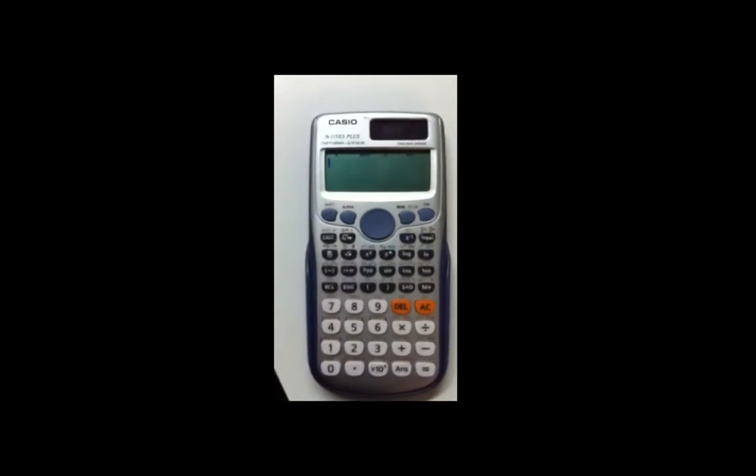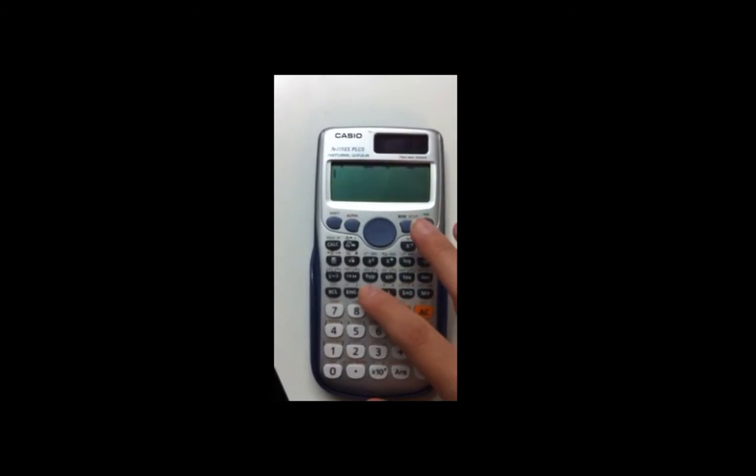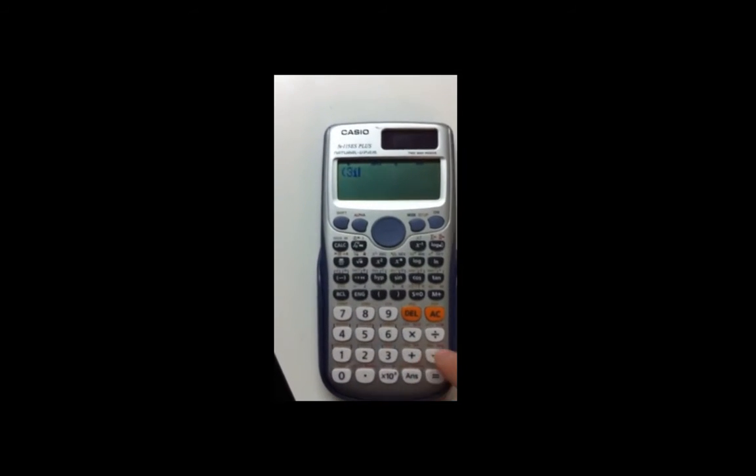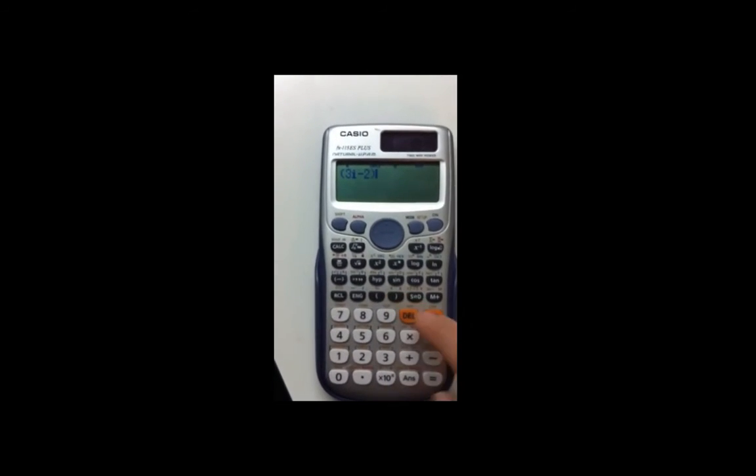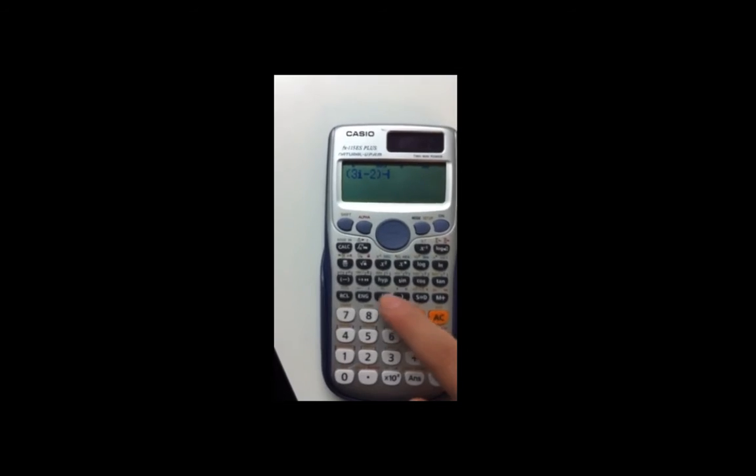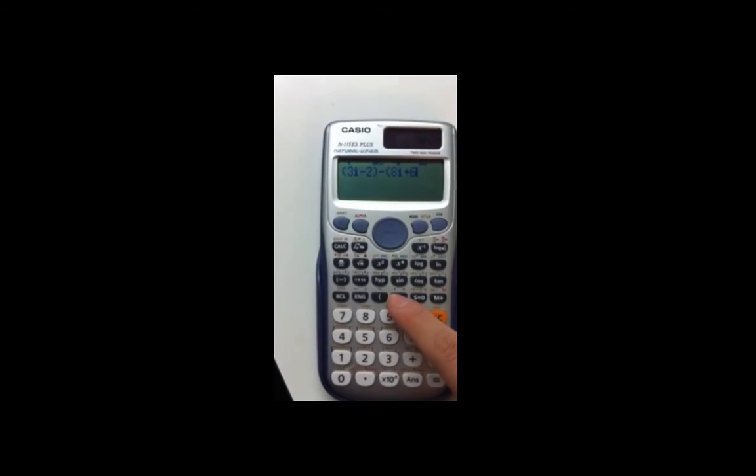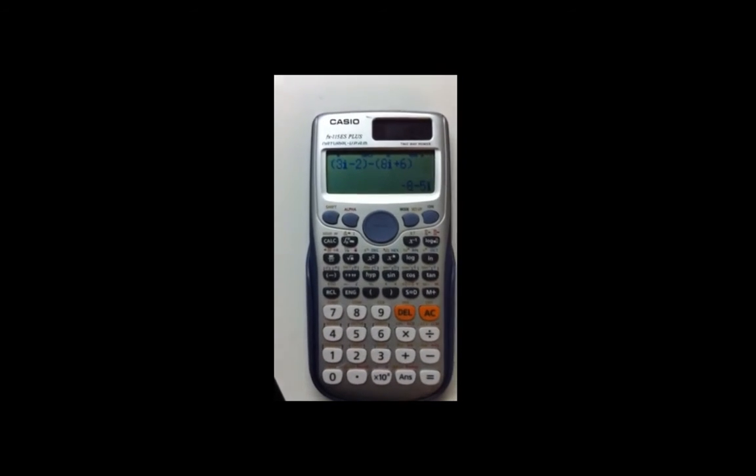3i—and this is where the i is—minus 2, close parenthesis, minus 4i plus 6. And then I close parenthesis, and voila.